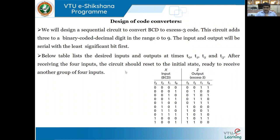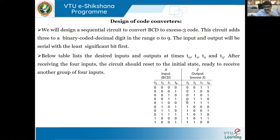After receiving the four inputs serially from t0 to t3, the circuit should reset to the initial state, ready to receive another group of four inputs. Now from this truth table, we'll try to obtain the state diagram first. Before going to the state graph, we'll analyze how to proceed with the state diagram.